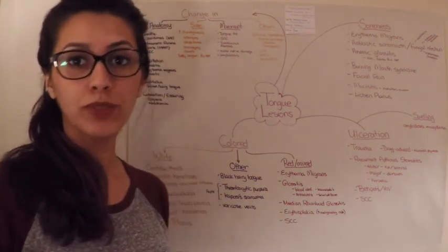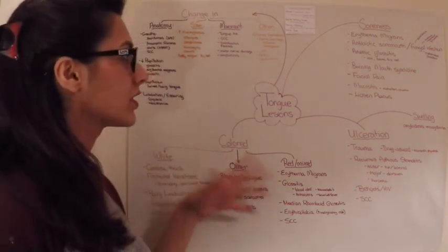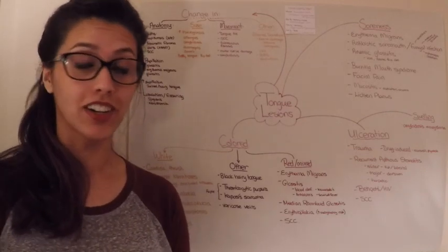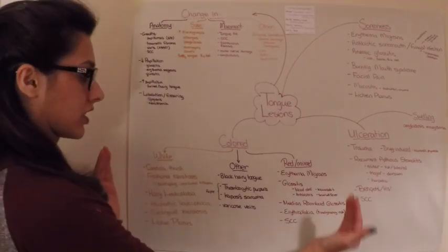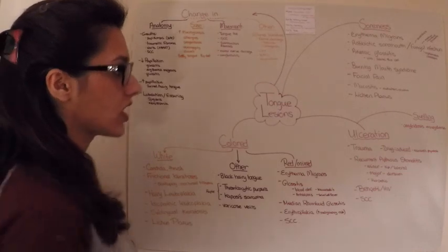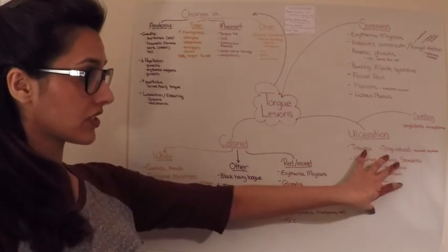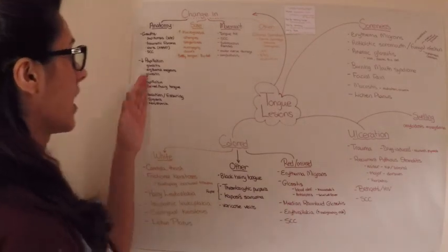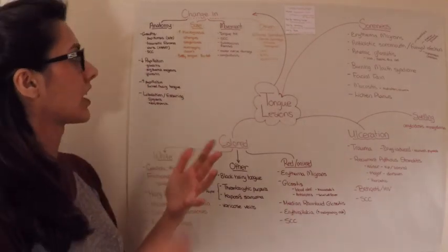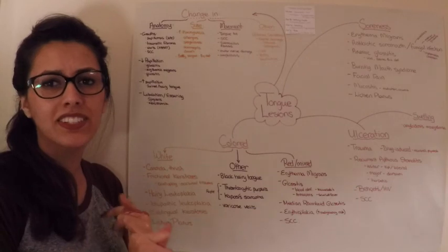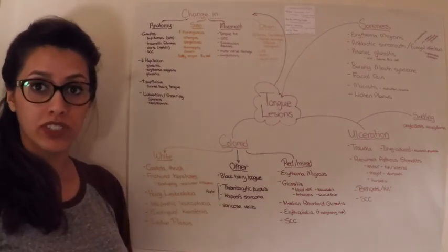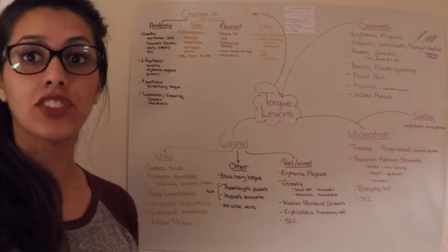Hey guys, so next we're doing tongue lesions. This poster is categorized by different signs and symptoms that can present on the tongue. We have colored lesions of the tongue, ulcers that you can find on the tongue, any cause for soreness of the tongue, and then in this corner we have diseases that can cause changes in anatomy, size, or movement of the tongue, as well as changes in taste.